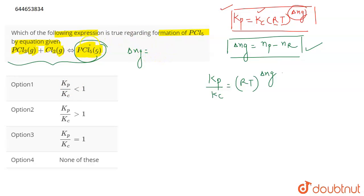So delta ng will be minus one. This means that Kp by Kc equals RT to the power minus one, which means that Kp by Kc is one by RT.